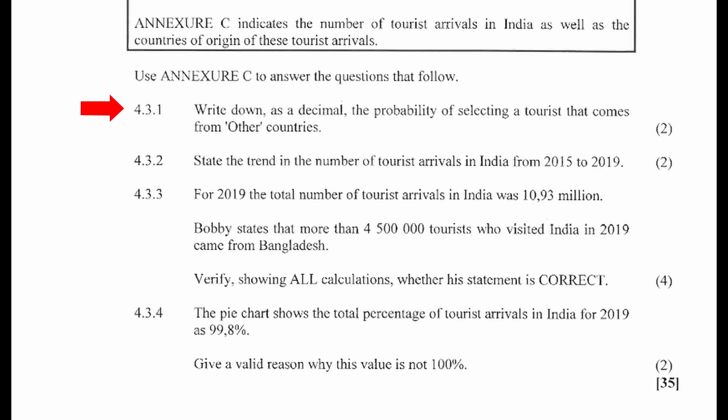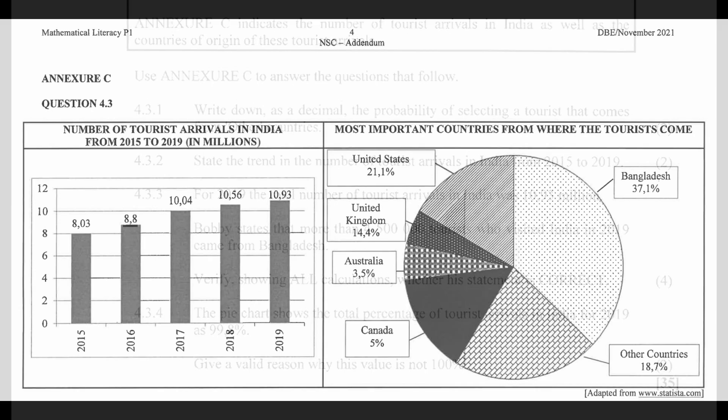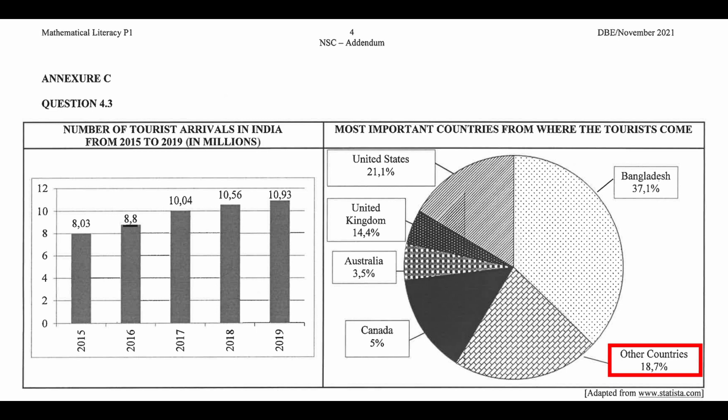4.3.1: Write down as a decimal the probability of selecting a tourist that comes from other countries. From Annexure C, the percentage of tourists that comes from other countries is 18.7%. We have to write this as a decimal, so the probability equals 18.7% divided by 100%, which gives us a value of 0.187.